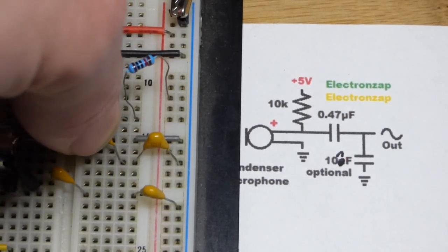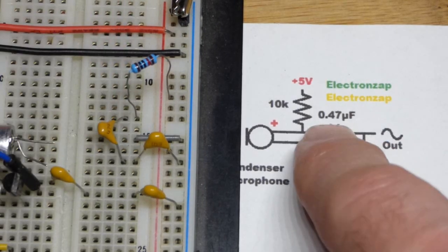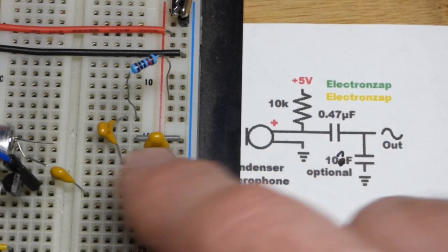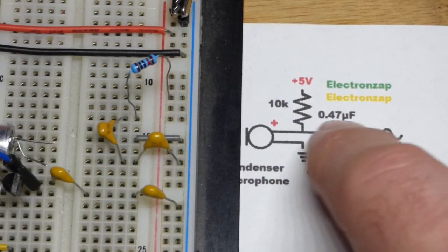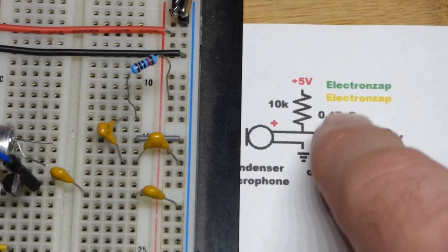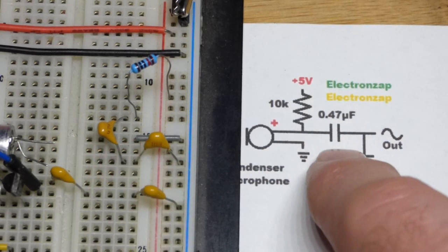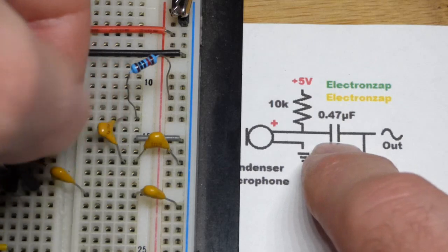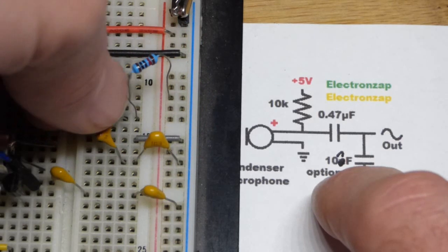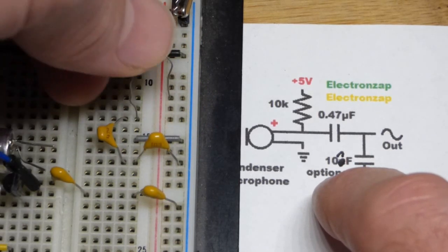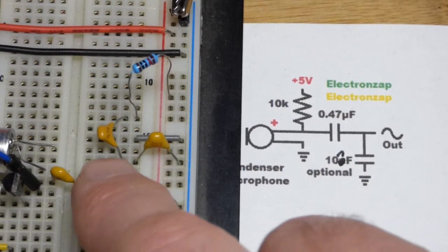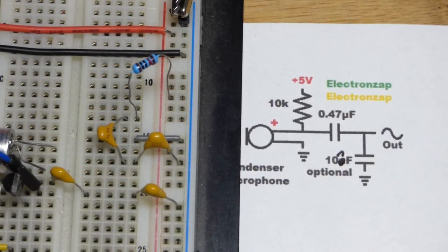We have here a coupling capacitor. I'm using 0.47 microfarad because that's the largest value I have in a kit where it's a non-polarized capacitor. I don't have a 1 microfarad, but I put a couple in parallel for 1 microfarad, basically, and it didn't really seem to make a difference. So, I'm just using 0.47 microfarad.